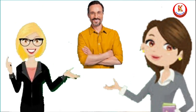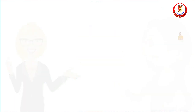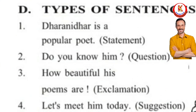Suppose two persons are talking about a man named Dharani. The first person says 'Dharani is a popular poet' — that is a declarative sentence. The second asks 'Do you know him?' — that is an interrogative sentence. The third says 'How beautiful his poems are!' — that is an exclamatory sentence. The fourth says 'Let us meet him today' — that is a suggestion, so it is an imperative sentence.